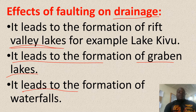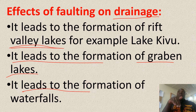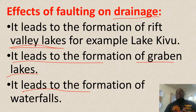Next, faulting leads to the formation of waterfalls. These are sharp points across rivers with steep cliffs where the river water keeps on dropping at that steep cliff. That happens when faulting occurs across the river channel.